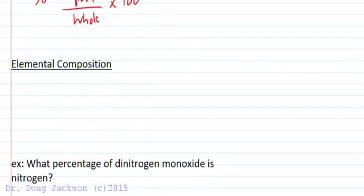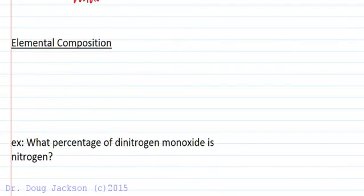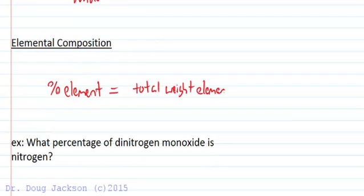When we apply this principle to elemental composition, we get that the percentage of an element within a compound is going to be equal to the total weight of that element within the compound divided by the formula weight of the entire compound times 100.